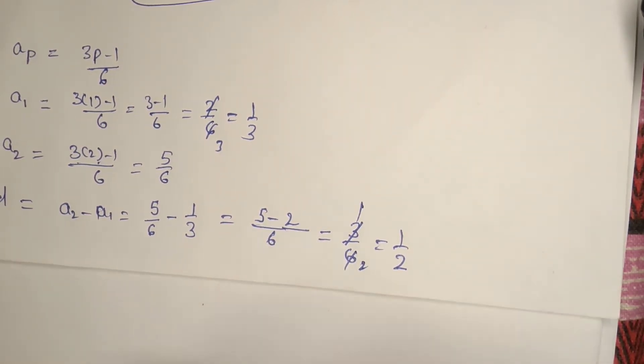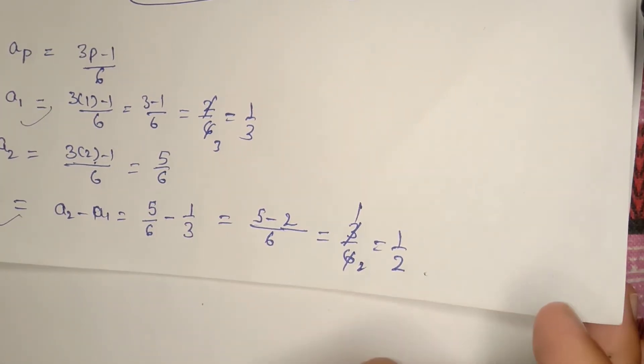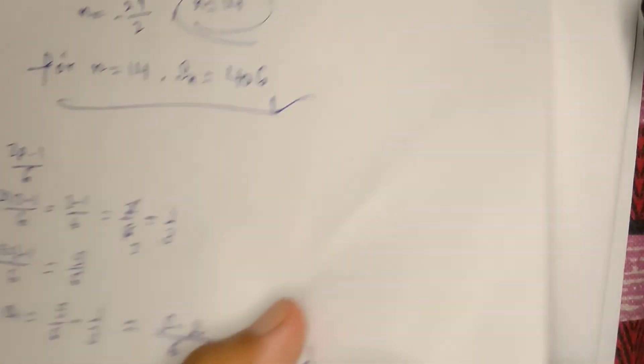Okay, a1 and d we have found. What do we need to find in this problem? The sum of first n terms, Sn, we need to find.